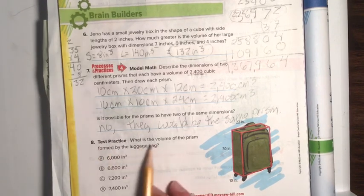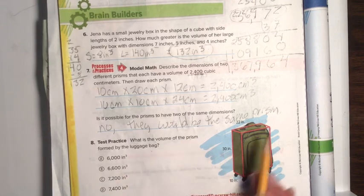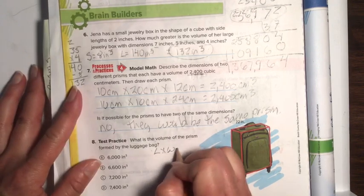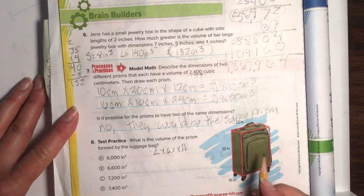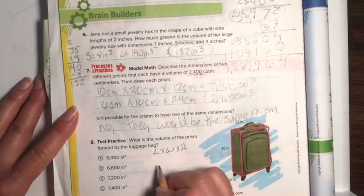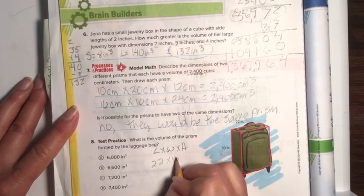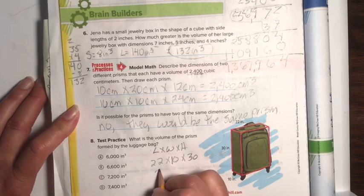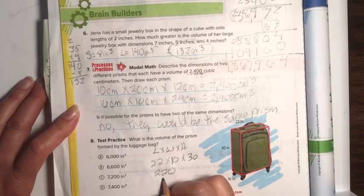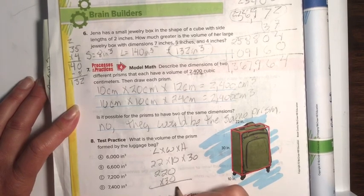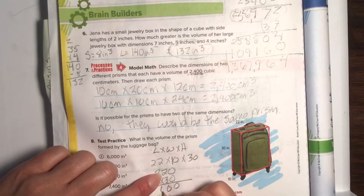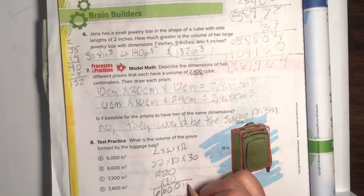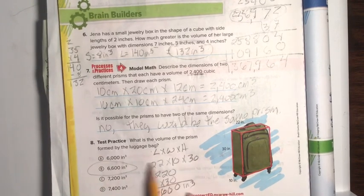Number eight. What is the volume of the prism formed by the luggage bag? So look at this red line right here. And what is the volume? Remember, volume is length times width times height. So let's plug these numbers in. So the length, remember you can do these in any order. So let's do 22 times 10 times 30. Okay. 22 times 10. Well, you just add a 0, 220. Then times the 30. Well, bring the 30 down. 0 times everything is 0. Do you see that number there somewhere? 6,600 inches cubed. Make sure I see this work right here though.